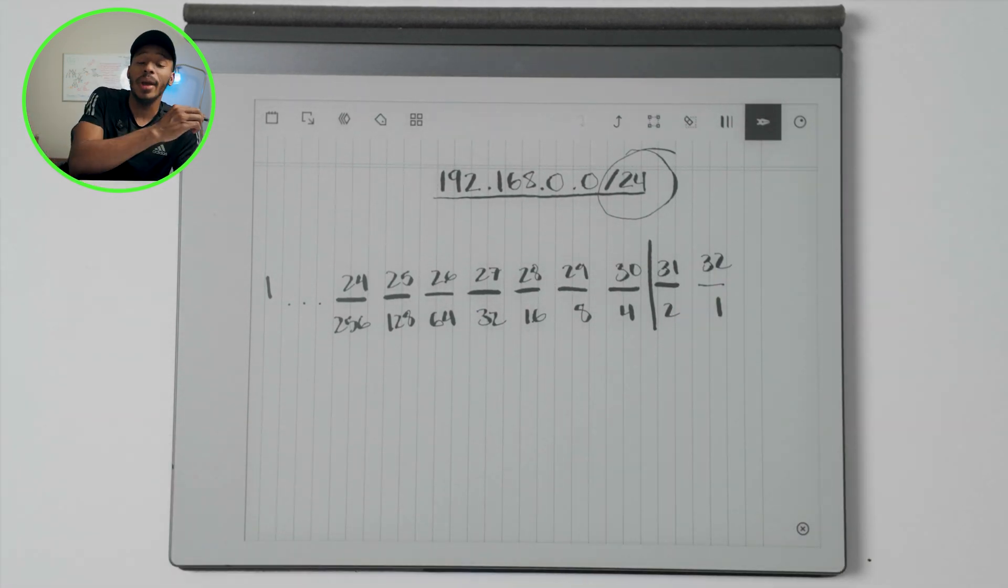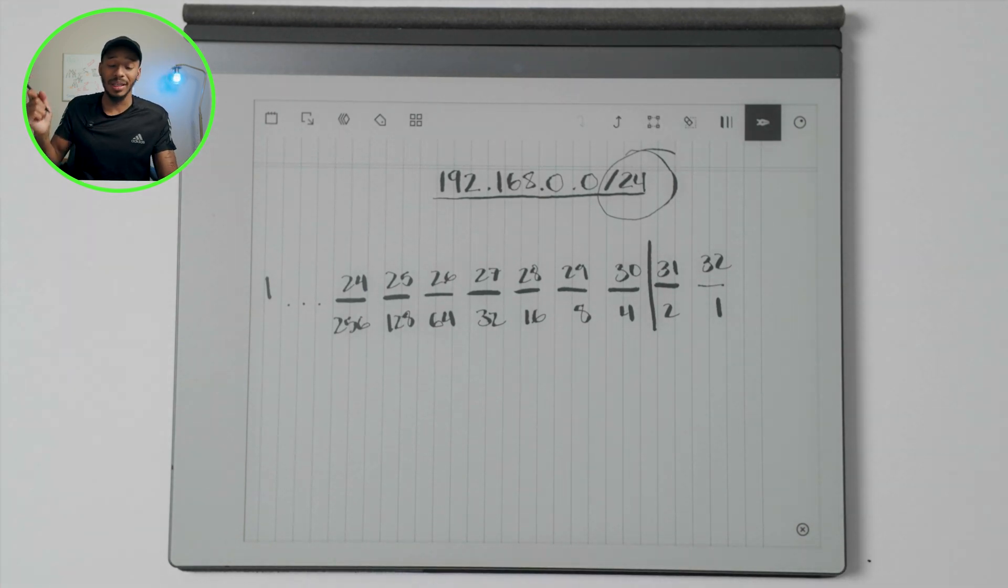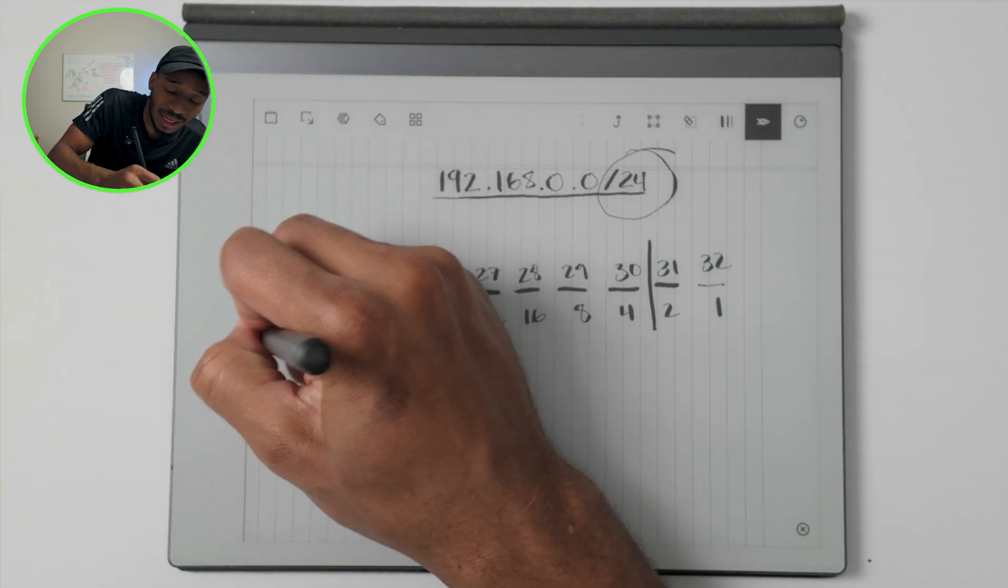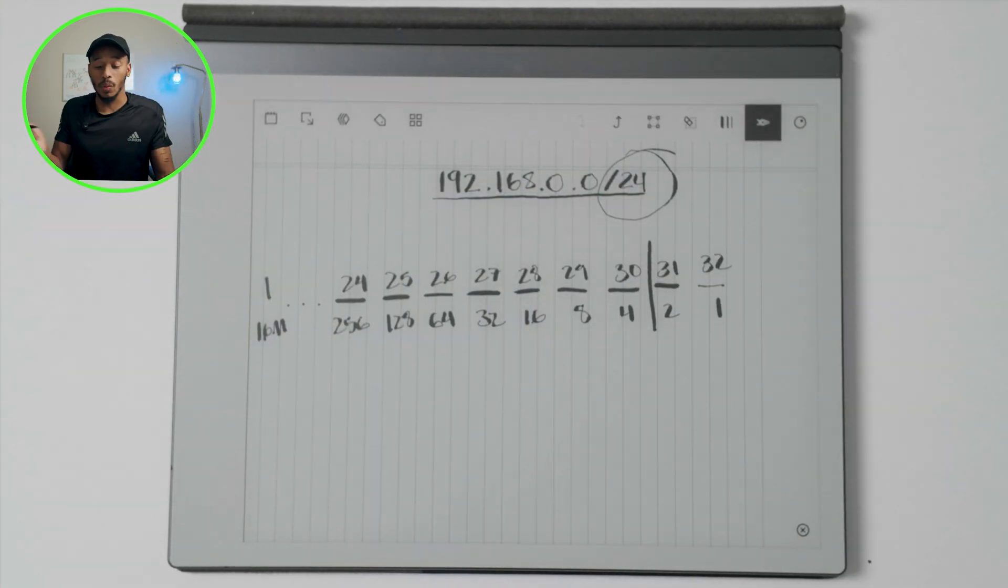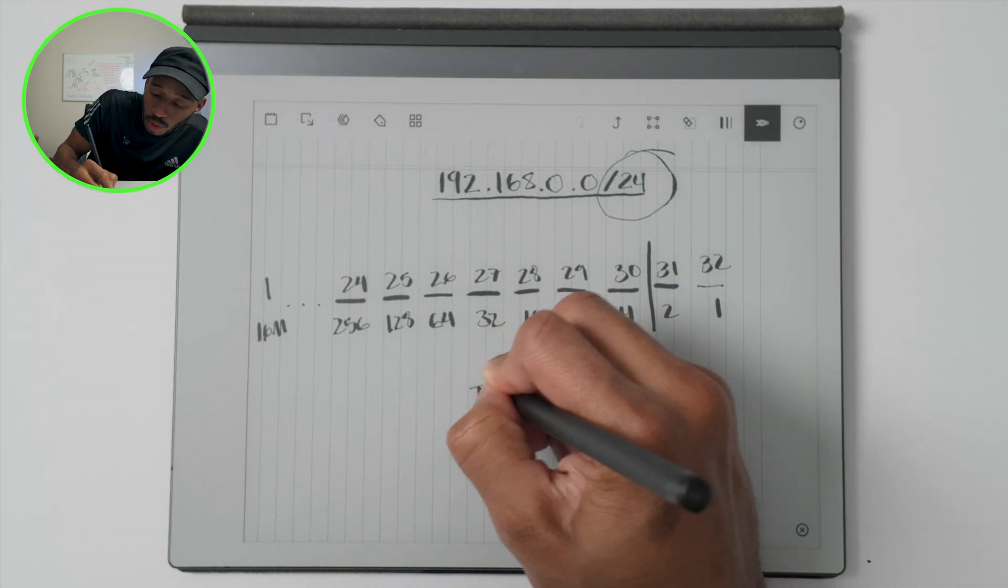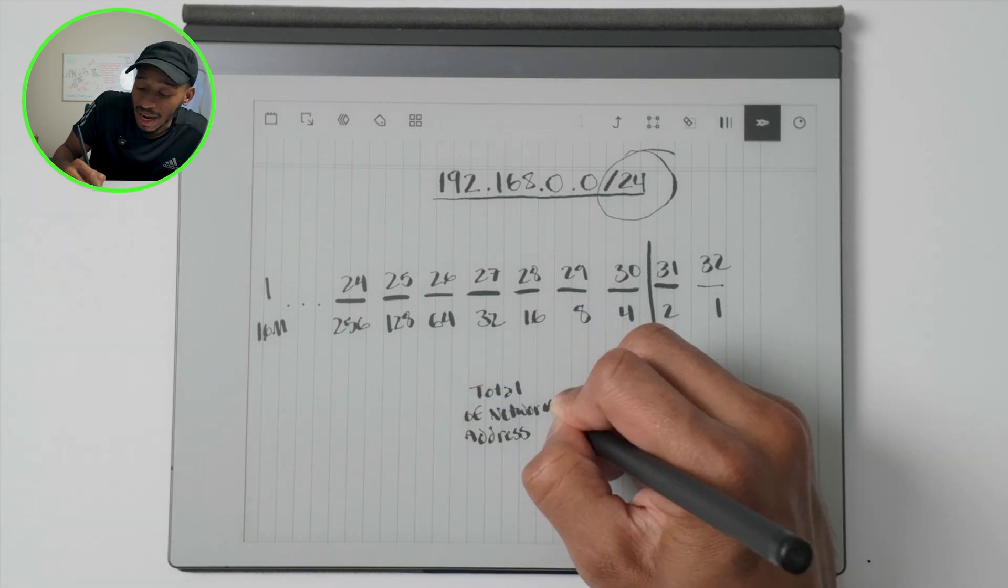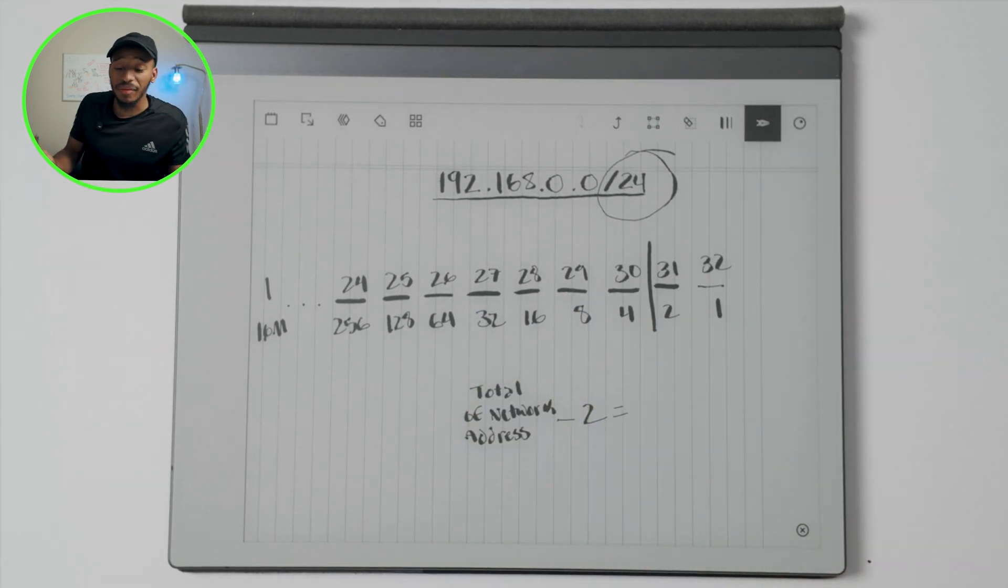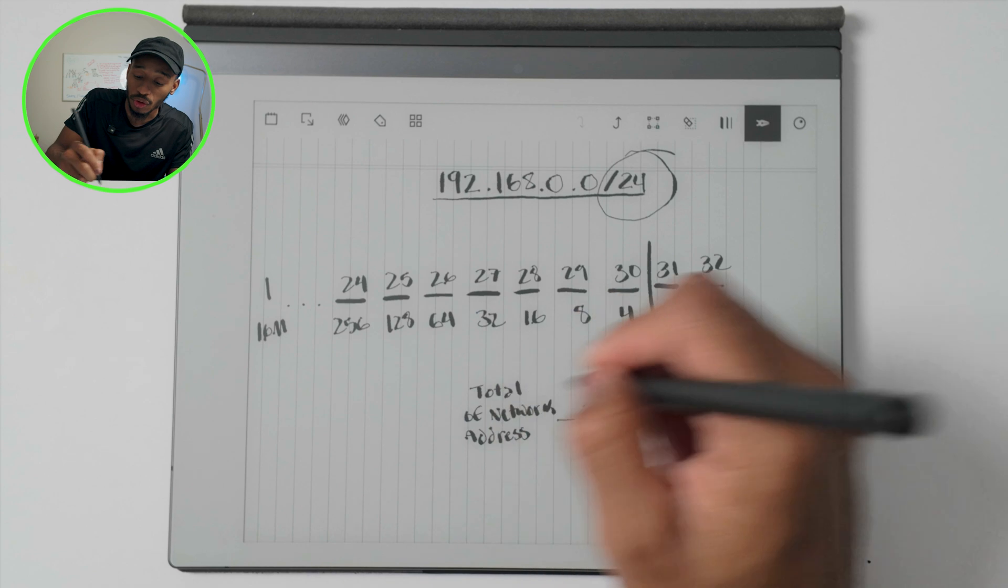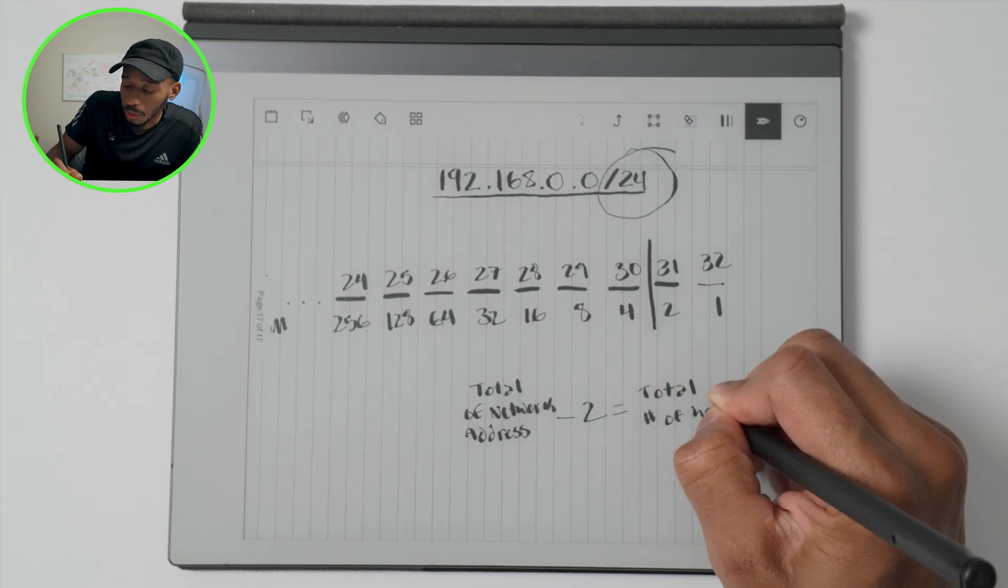So from 30 all the way down to one, which would give you the total of like 16 million addresses or whatnot, how you calculate the total number of host bits is just say total number of network addresses minus two. That's all you have to do. This is your formula equals total number of host addresses.